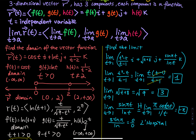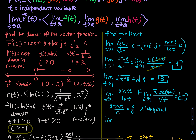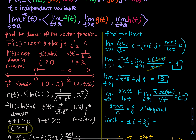So the limit of the vector function equals 1·i + 3·j − π·k.